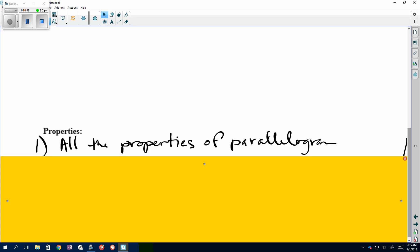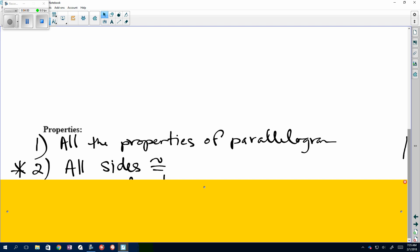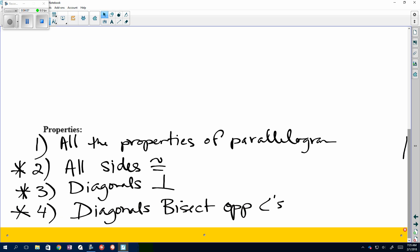Now, something special for our rhombus is that all sides are congruent. In a parallelogram, that doesn't happen. We have the diagonals are perpendicular, and we have the diagonals bisect opposite angles. So, that is our notes for our rhombus. Now, we're going to get into some examples.